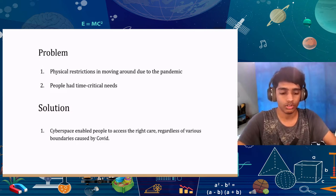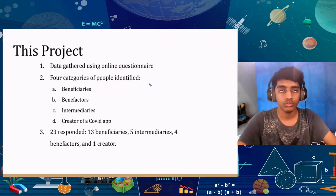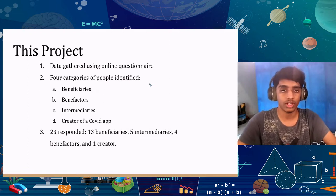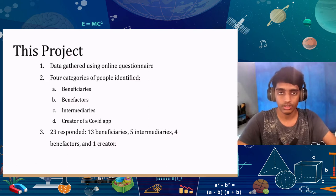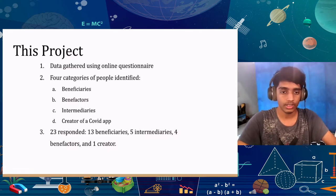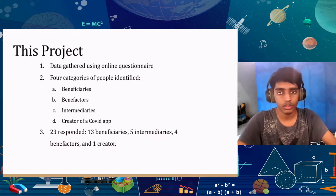For this project, I used a questionnaire to gather data. Four categories of people were identified: Beneficiaries — people who used apps to gather supplies; Benefactors — people who provided supplies to others through apps; Intermediaries — people who connected beneficiaries and benefactors; and finally, the creator of a COVID app. In total, we got 23 respondents — 13 beneficiaries, 5 intermediaries, 4 benefactors, and even one creator.